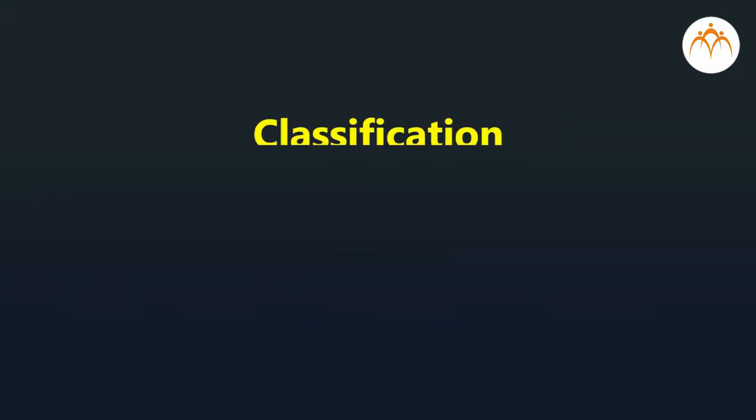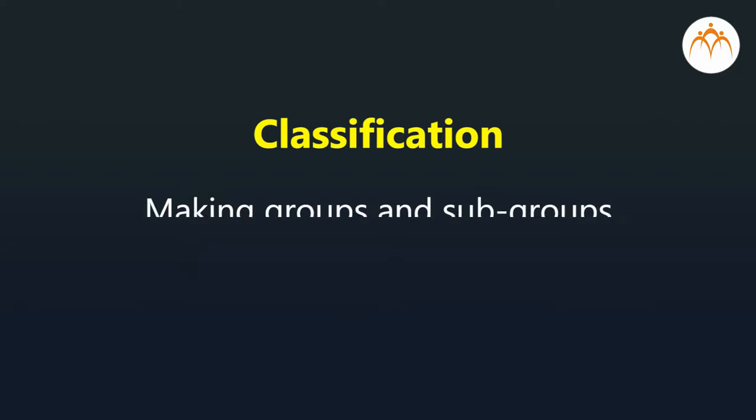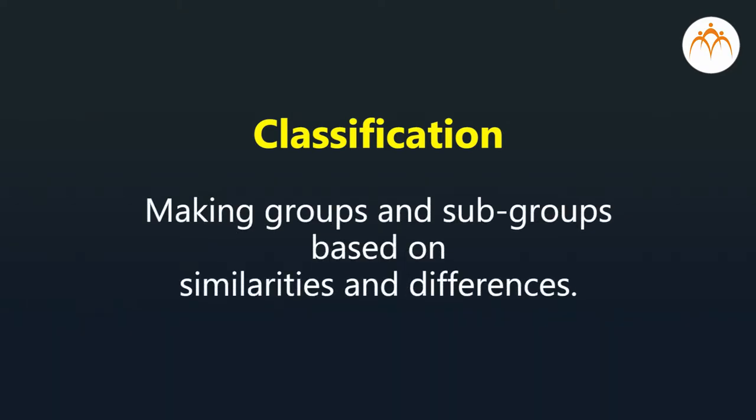Studying organisms without classification is very challenging. Classification is making groups and subgroups based on similarities and differences. Have you visited a shopping mall? Have you seen different sections in the mall? In a shopping mall you will find sections like grocery, electronic items, garments, jewelry, etc.